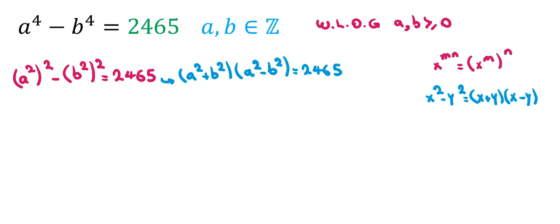Next step, we use the identity again here. If we apply that, it will be a squared plus b squared - the first one we write it so. Next one, it will be a plus b times a minus b equal to 2465.